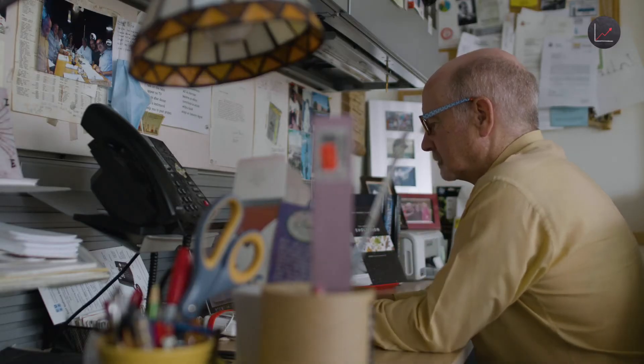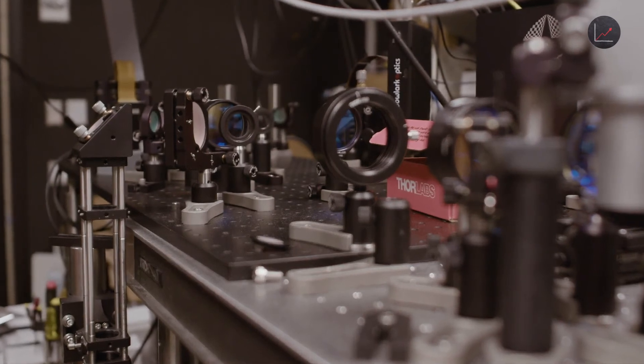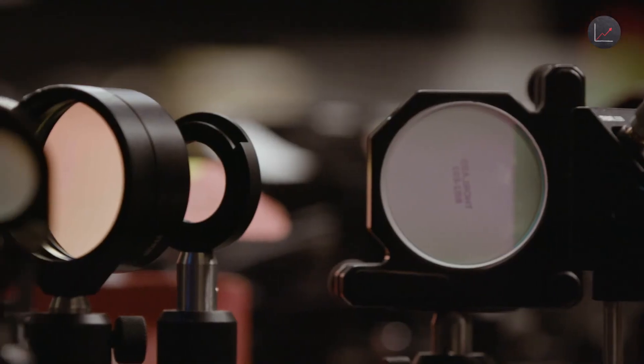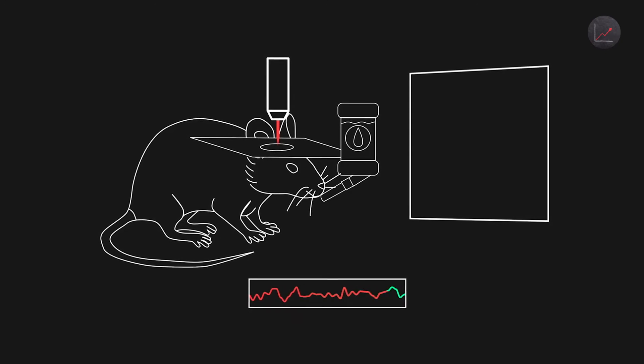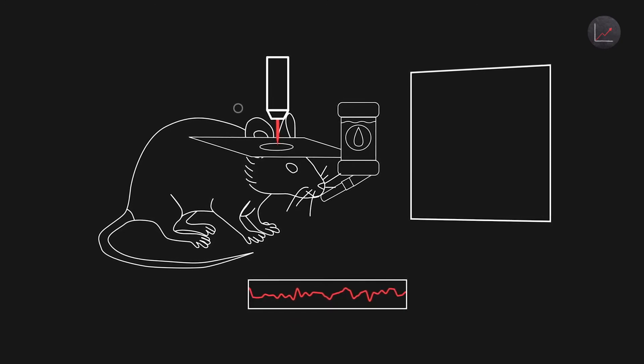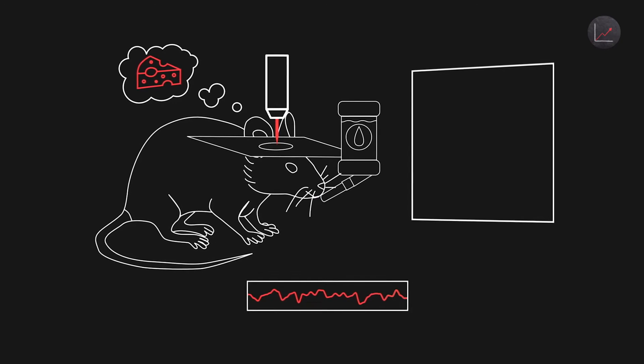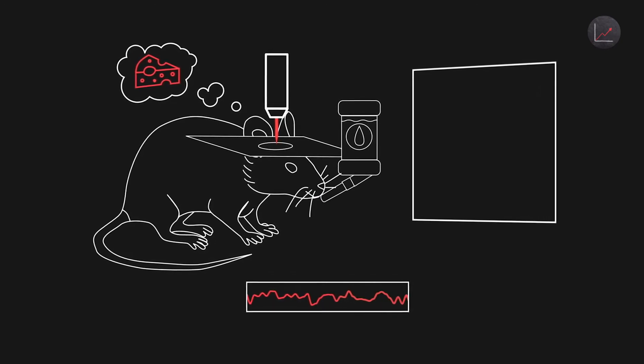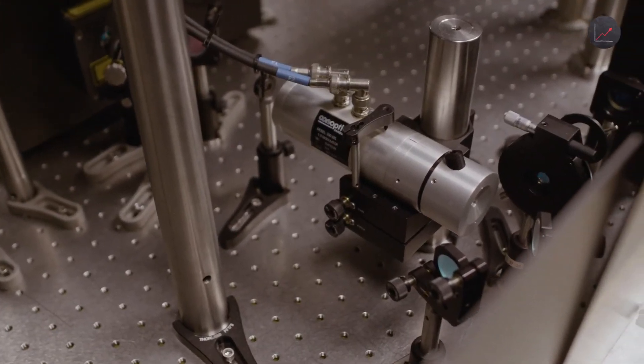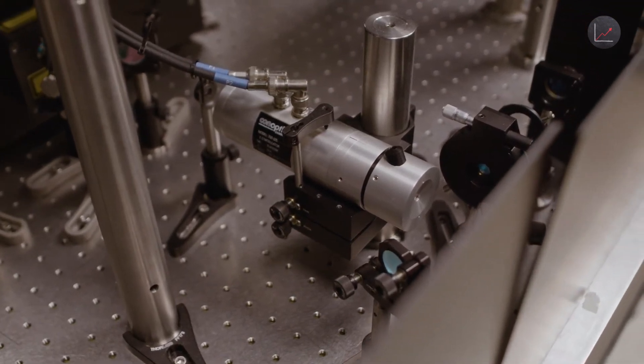But here at Columbia University, neurobiologist Rafael Yuste is proving that it's possible to go much further, to actually change the brain's perception of reality. So we actually activate the neurons that correspond to a particular image, and the mouse behaves exactly the same as if he were seeing that image. So in a way, we're sort of taking control of his perception and making him believe that he's seeing something that is not there. Now what can be done in animals today could be done in humans tomorrow.